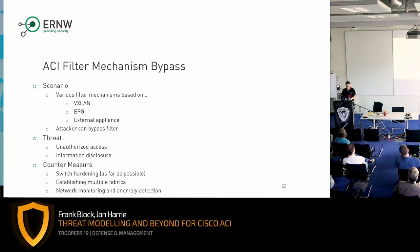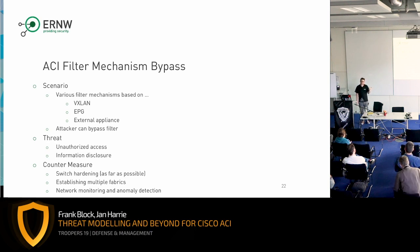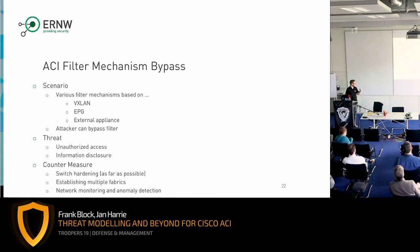For countermeasures against such attacks, you're in a somewhat hard situation. Traditional switch hardening is limited because you now only define your network through the APIC. You can configure it as best you can, but hardening possibilities are limited. If you have very sensitive data, you should establish at least multiple fabrics. We always recommend leveraging the monitoring capabilities of this infrastructure and looking out for anomalies in the network.